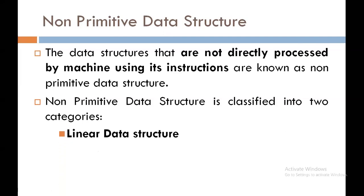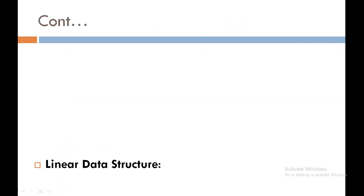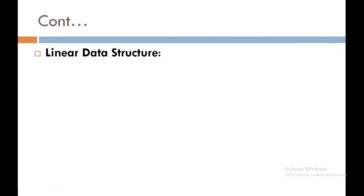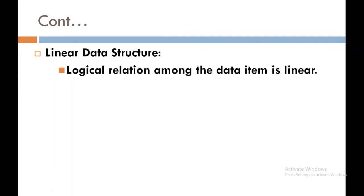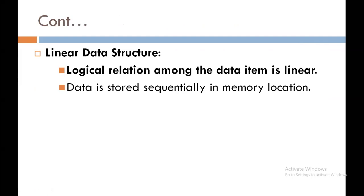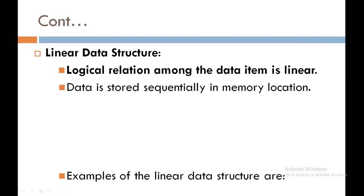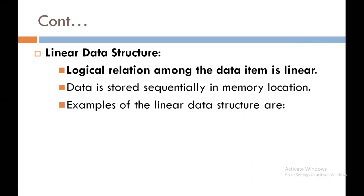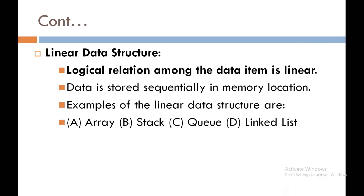The first category is linear data structure. In this data structure, the logical relation among the data items is linear, meaning data is stored sequentially in memory locations — stored one by one. Examples of linear data structures are array, stack, queue, and linked list.